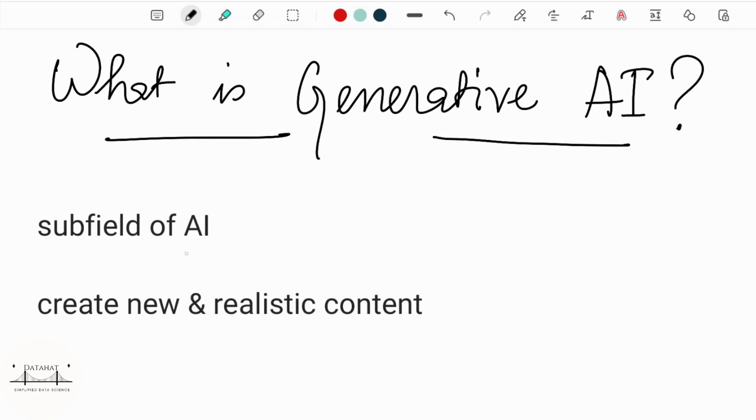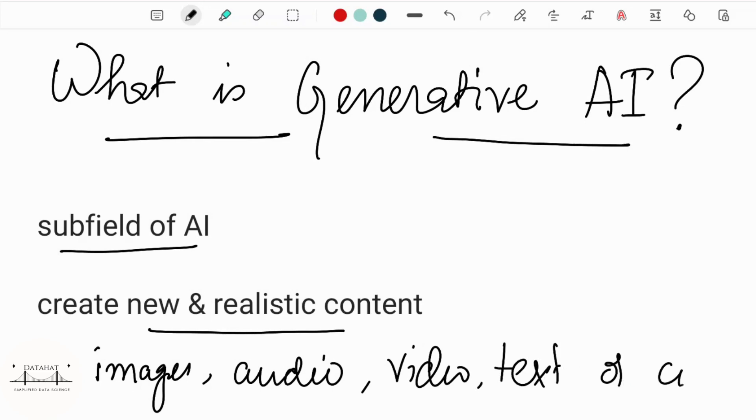Generative AI is a subfield of Artificial Intelligence that uses various algorithms and models to create new and realistic content. These content could be images, audio, video, text or even code.